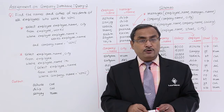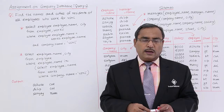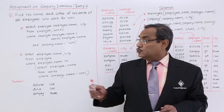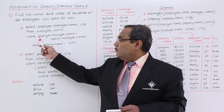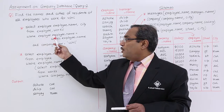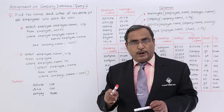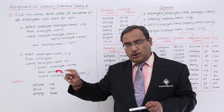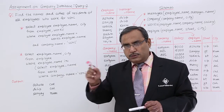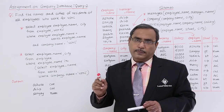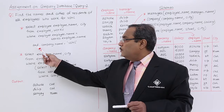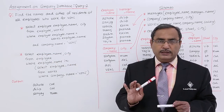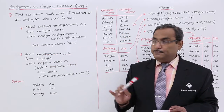That means it is going to form all possible tuple combinations of employee and works. Now, whenever we apply employee.employee_name = works.employee_name, we are considering only those tuples or records where the employee_name column values are the same. That is why then we further filter with company_name = 'VSNL', and in this way the query gives us the answer.